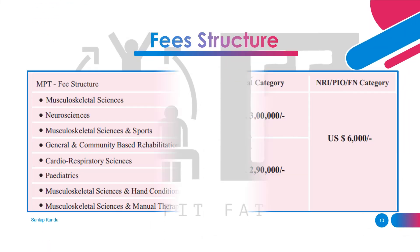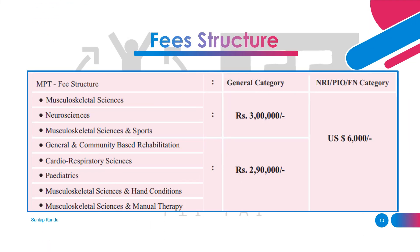Now the fee structure. You have to pay 3 lakh rupees per annum for musculoskeletal sciences, neurosciences, and sports physiotherapy. For the rest of the courses, you need to pay 2 lakh 90 thousand rupees per annum.